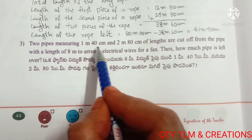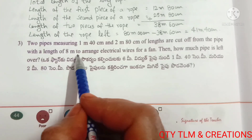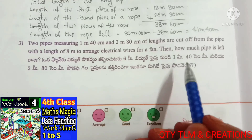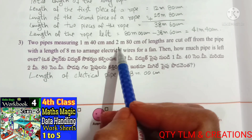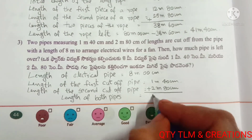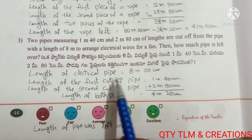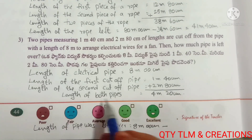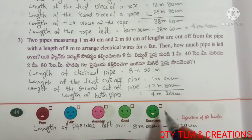Next question: Two pipes measuring 1 meter 40 centimeters and 2 meter 80 centimeters are cut off from a pipe of length 8 meters to arrange electrical wires for a fan. Then how much pipe is left over? Length of both pipes equals 4 meters 20 centimeters. Length of pipe left equals 3 meters 80 centimeters.